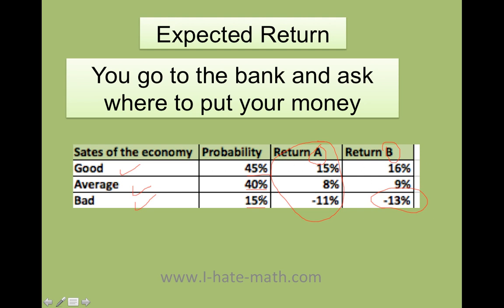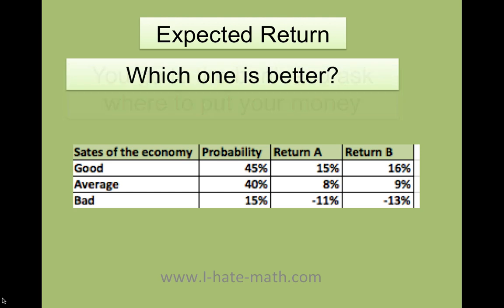It is very important you understand that the probability can never be negative. However, the return can be negative because you can lose money. When you have problems like this, your probability always has to add up to 1, but the return can be positive or negative. So you ask yourself, which one is better — Stock A or Stock B? This is when you're going to go ahead and calculate the expected return of each stock. The one with the higher expected return is the one that's going to give you the most money.